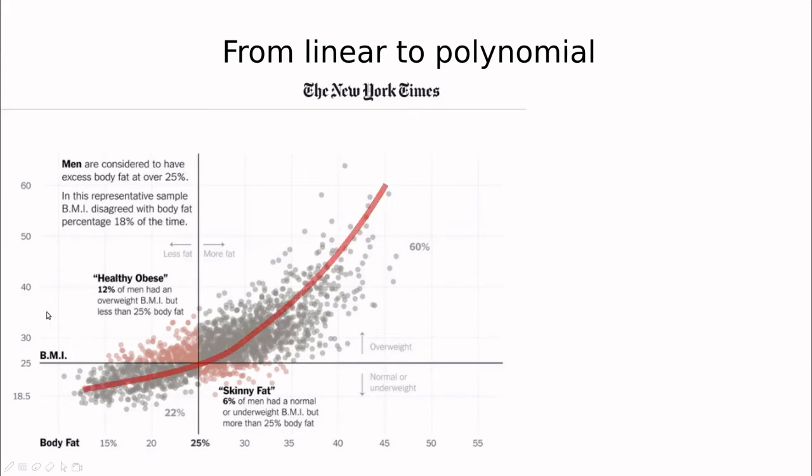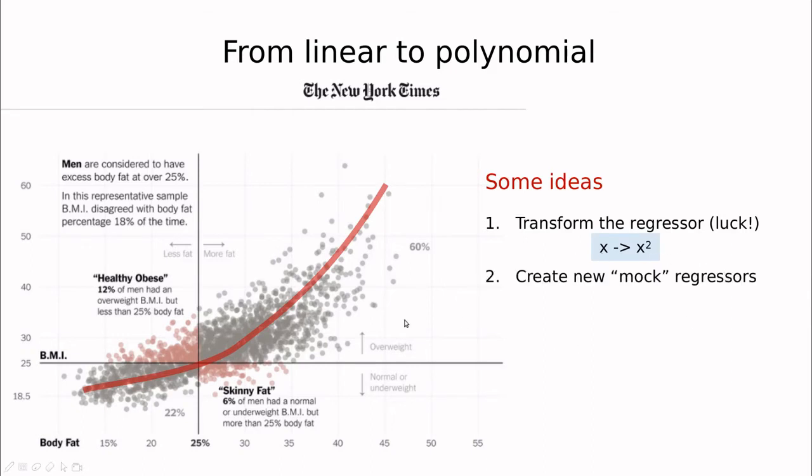So we have some, we can introduce some ideas here in order to solve this. One idea would be to transform the regressor. Imagine that this is actually simply changing x by x squared. That could work.